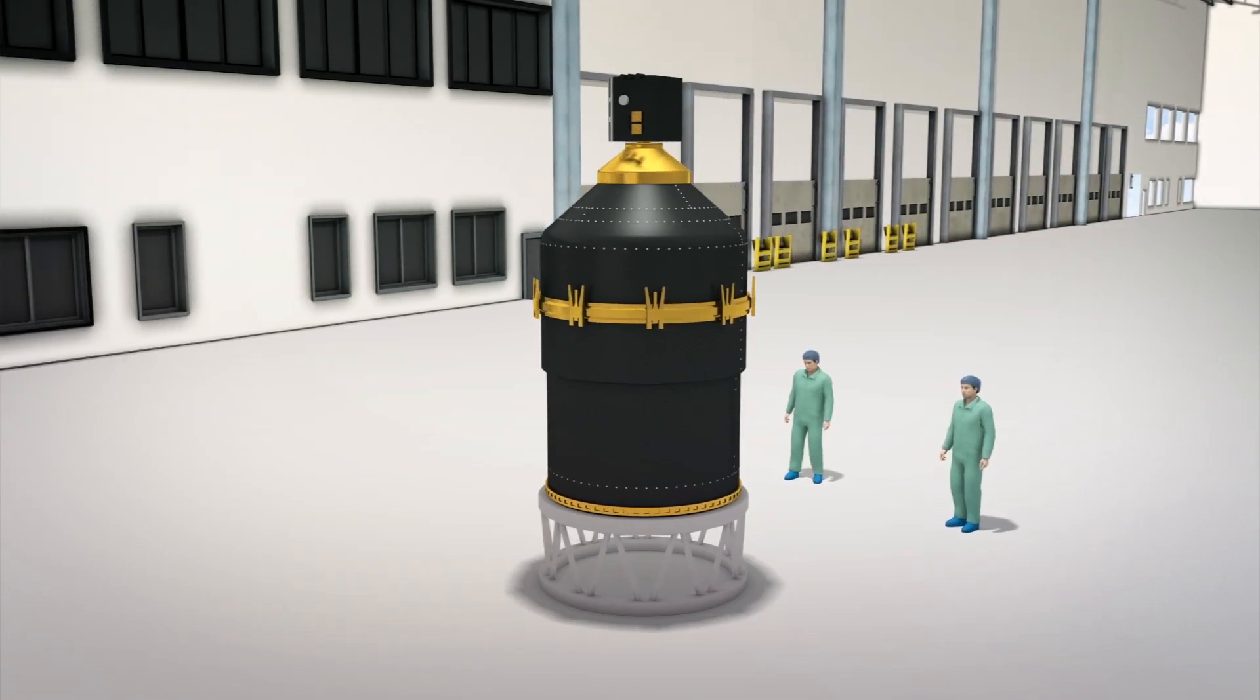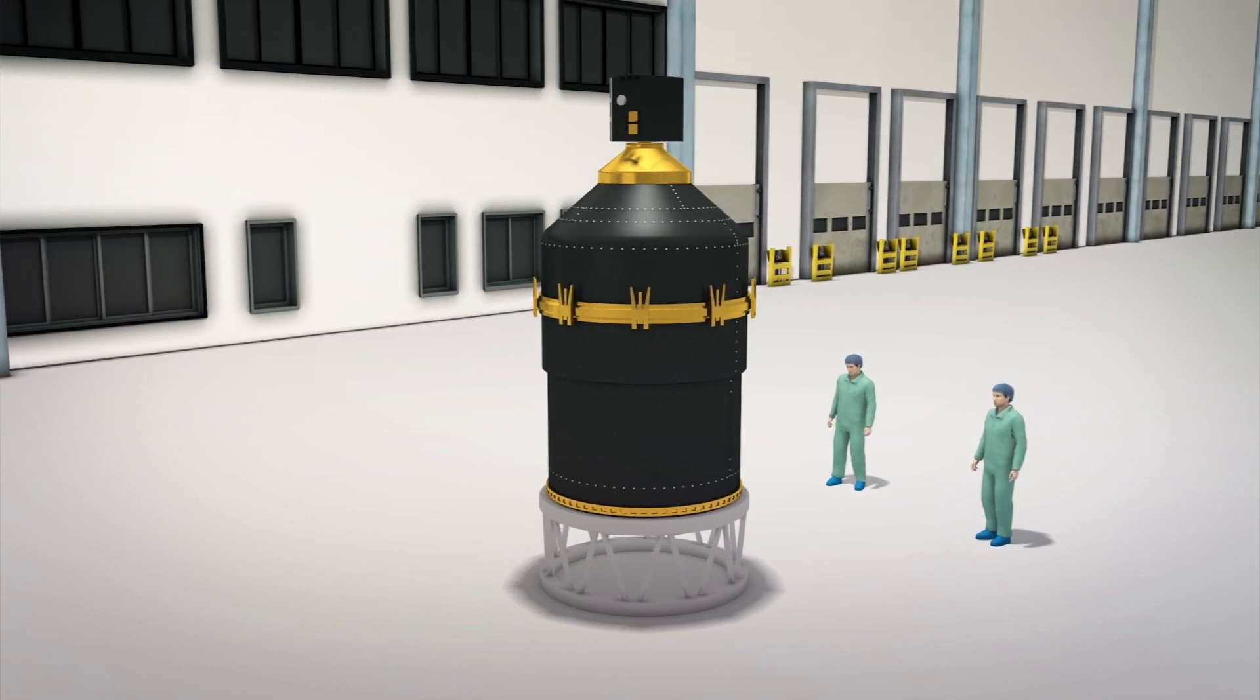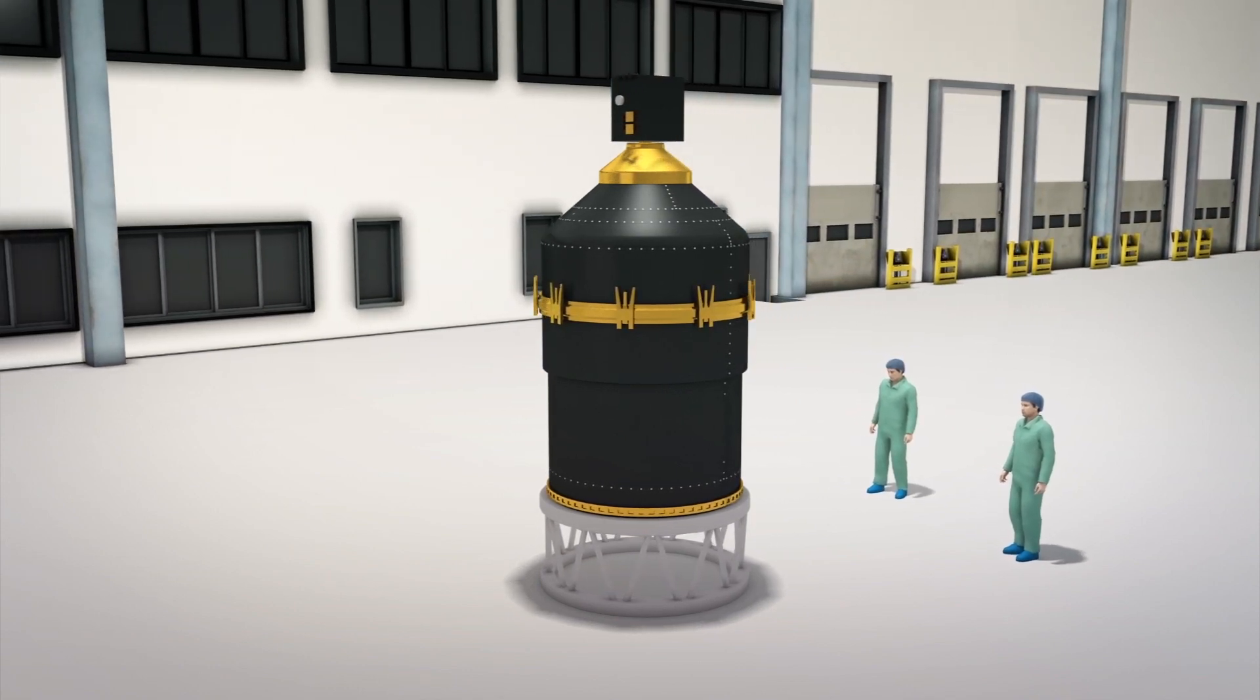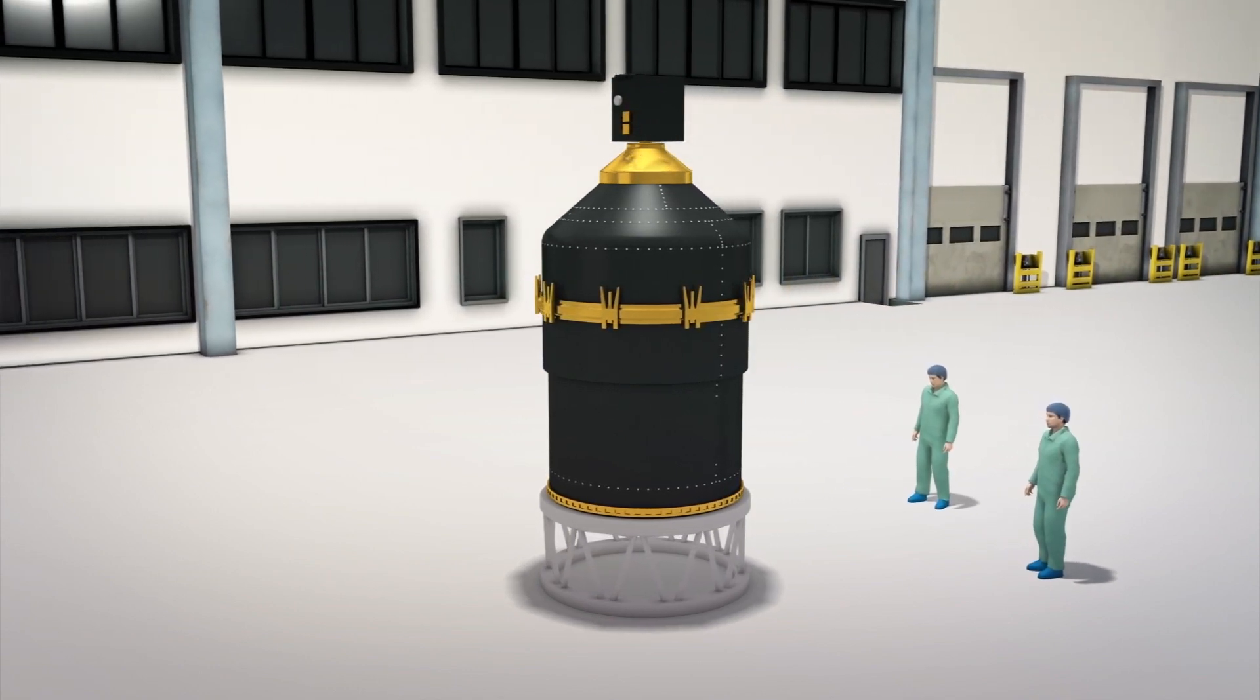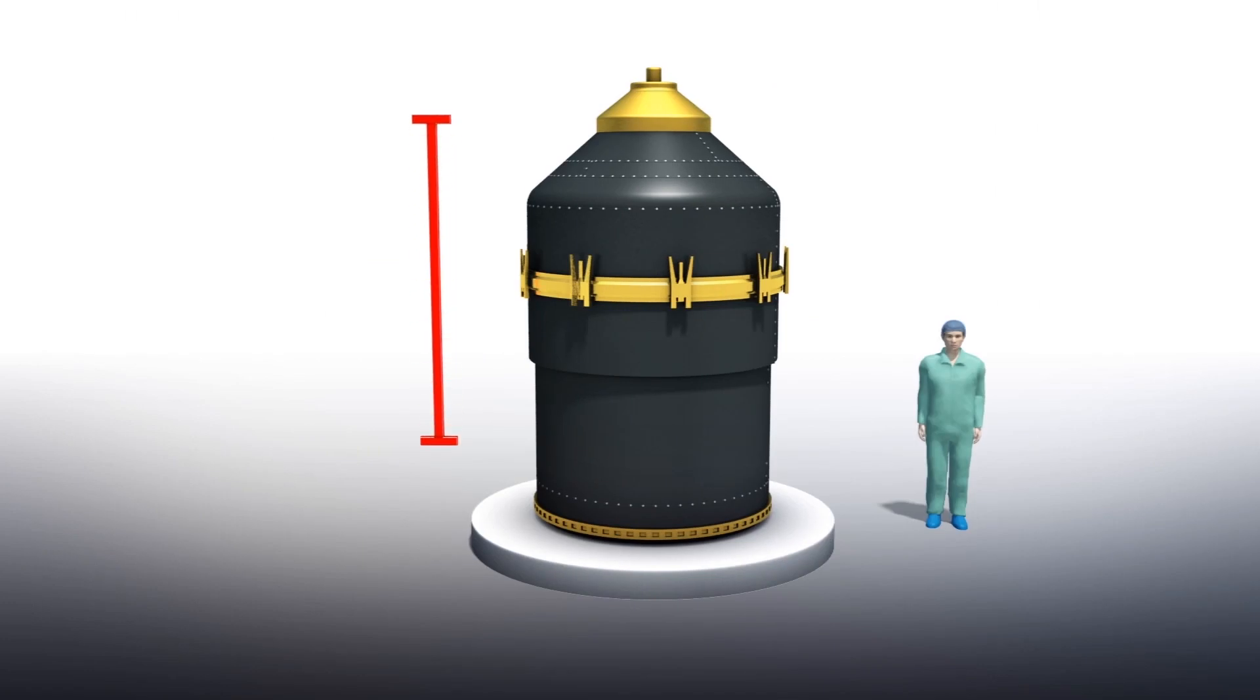According to the ESA, ClearSpace1 will recover the Vespa, a second payload adapter that has been left adrift since it helped deliver the Proba-V satellite to space in 2013. The Vespa is close in size to a small satellite, and its simple shape and sturdy construction make the adapter a prime candidate for the experiment.